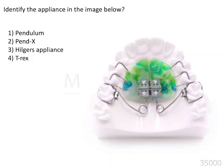In this question we have been asked to identify the appliance given in the image. Whenever such image-based questions are given, you need to look at the image as well as the options very thoroughly and carefully. At first glance, you might think it is a pendulum appliance, and if you're in a hurry you might go ahead and mark the pendulum appliance — which would be wrong.